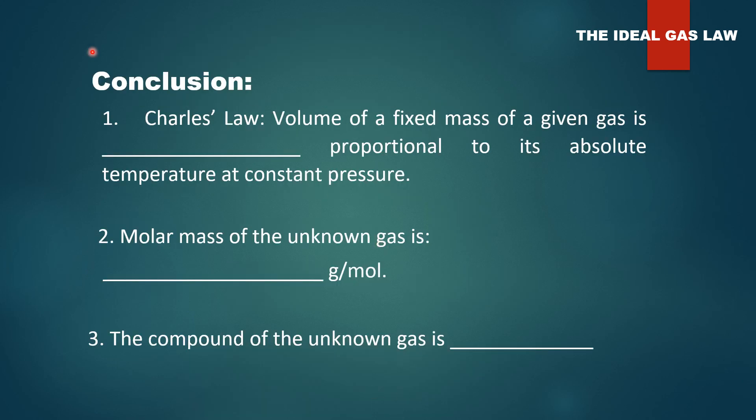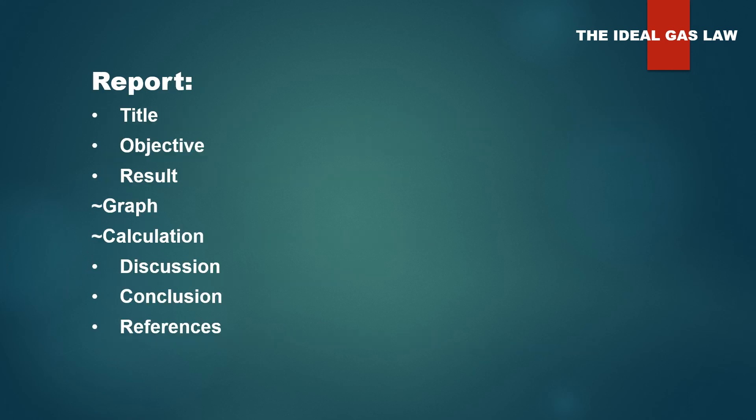Okay, so, last is you have to write down the conclusion. Charles's law, volume of a fixed mass of a given gas is proportional to. So, it's directly or inversely. Next, based on your calculation, what is the molar mass of the unknown gas. And then, try to predict the compound of unknown gas based on the molar mass that you found.